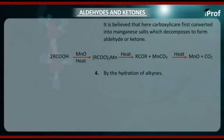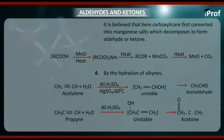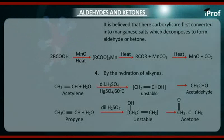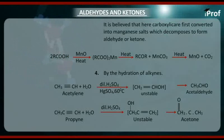The next method of preparation is by the hydration of alkynes. Alkynes when hydrated in presence of dilute sulphuric acid and mercury sulphate at 60 degrees centigrade gives the corresponding aldehyde or ketones. The reaction: acetylene (CH≡CH) plus water in presence of dilute sulphuric acid and mercury sulphate at 60 degrees centigrade forms an unstable compound CH2=CHOH.